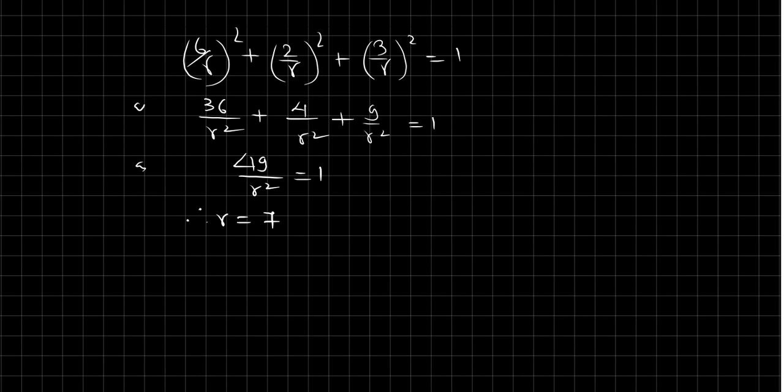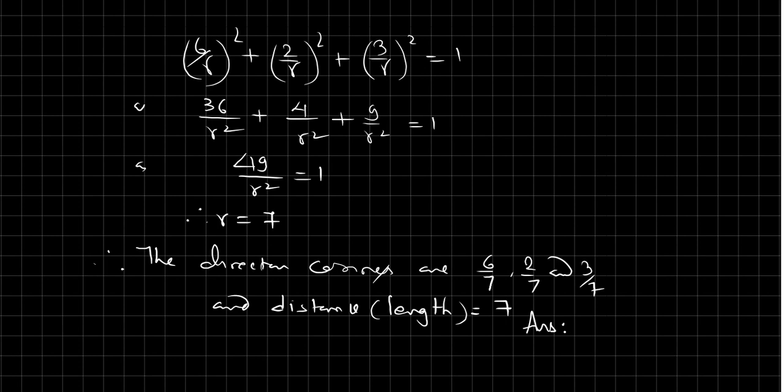Therefore the length r equals 7. Therefore the direction cosines are l equals 6 by 7, m equals 2 by 7, and n equals 3 by 7, and the distance or the length equals 7. Answer. So we can find the projection of a line on the axis and direction cosine in this way. We can solve the question.